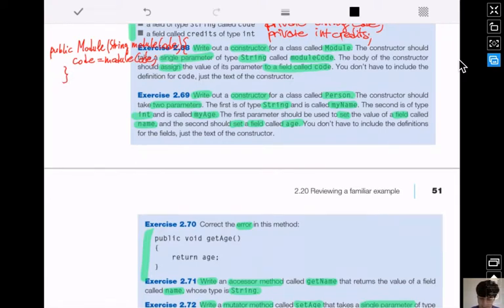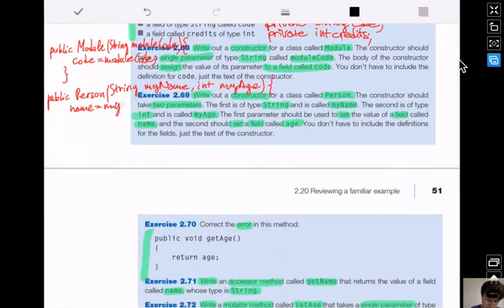Next exercise: a constructor for Person with two parameters. So, String myName and int myAge. Name is assigned to myName, and age is initialized to myAge.